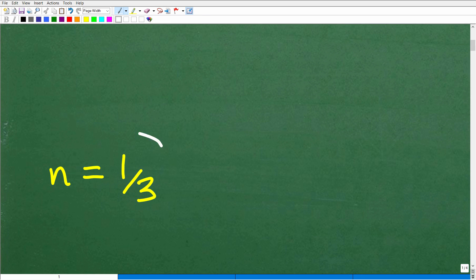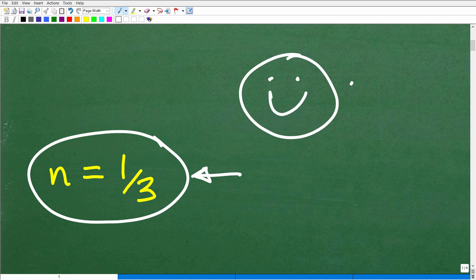N is equal to 1 third. That is the solution to that basic equation. Okay, so how'd you do? Well, if you got that right,